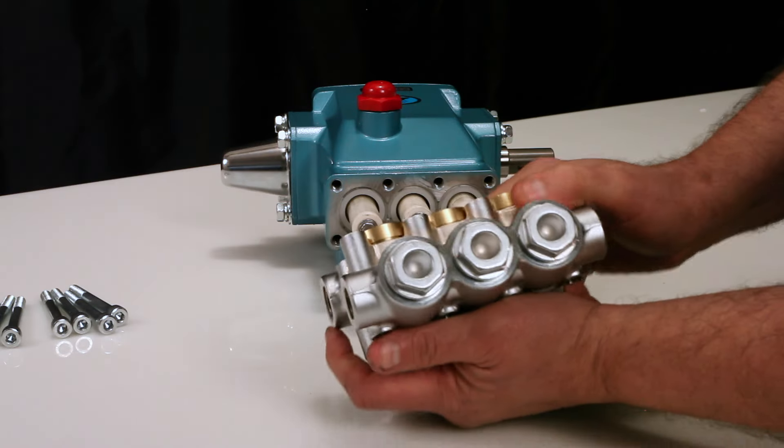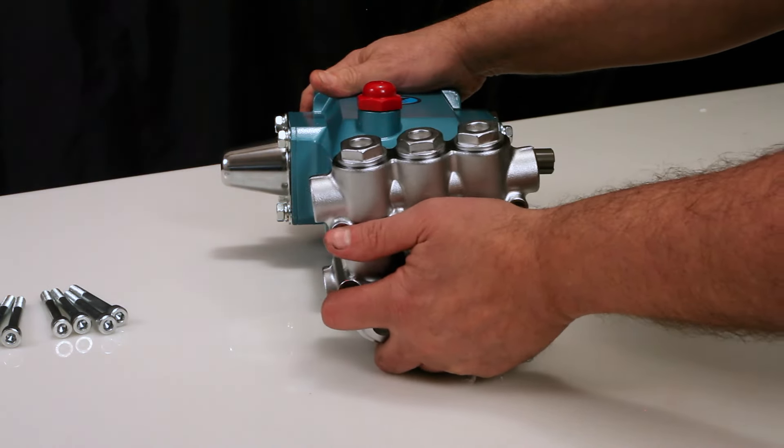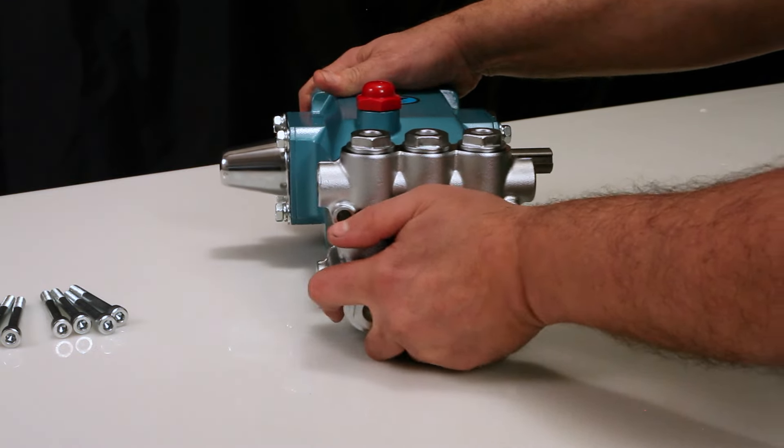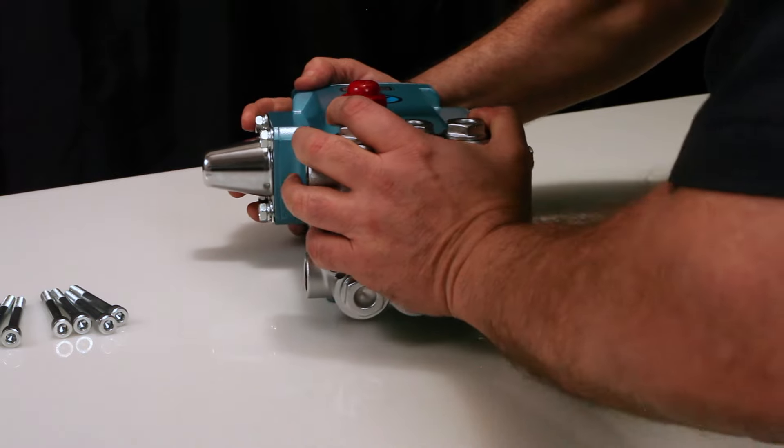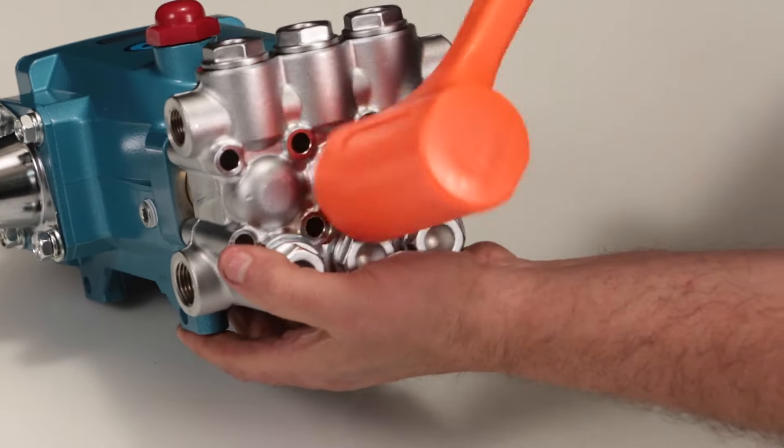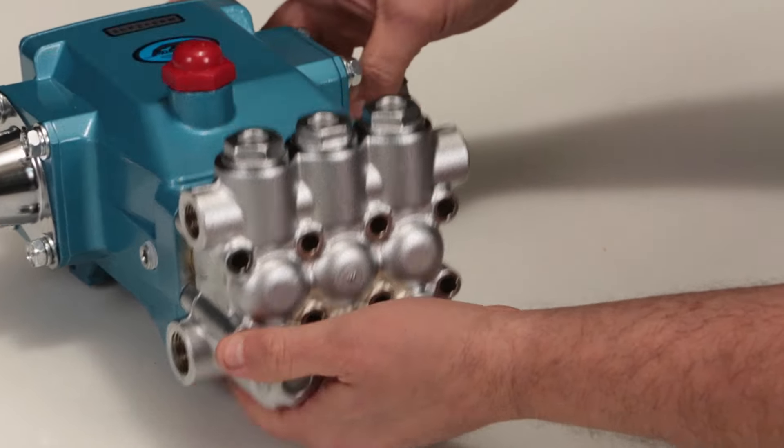Install the manifold by hand, ensuring even alignment. Finish installing using a rubber hammer to ensure manifold is flush to crankcase surface.